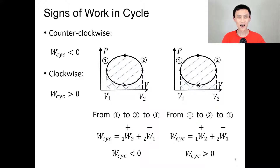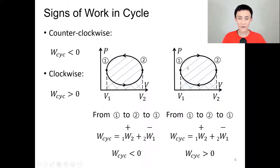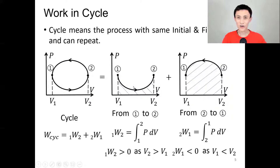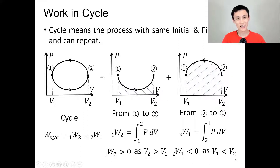Let's look at the signs of work in a cycle. If the cycle is running counterclockwise, we are going to have negative overall work. The cycle runs counterclockwise from one to two — the area representing positive work is smaller than the area representing the negative work. So overall work is negative because the negative work area is greater than the positive work area. This is a counterclockwise cycle.